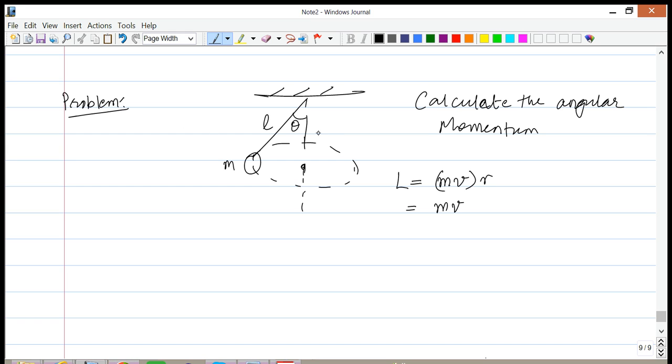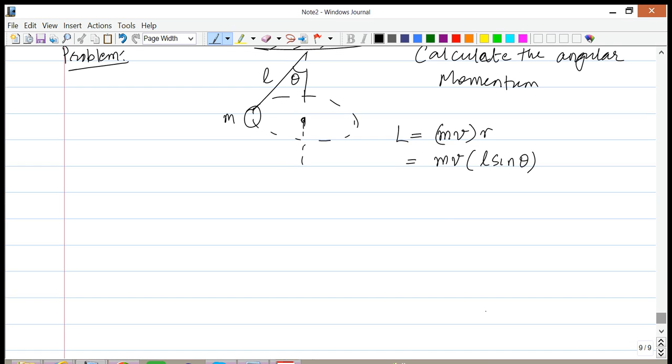If you look at the radius of the circle, R is equal to L times sine of theta. So one of the things we need to do in the problem is figure out what V is, and once we know V we can plug it into this equation.